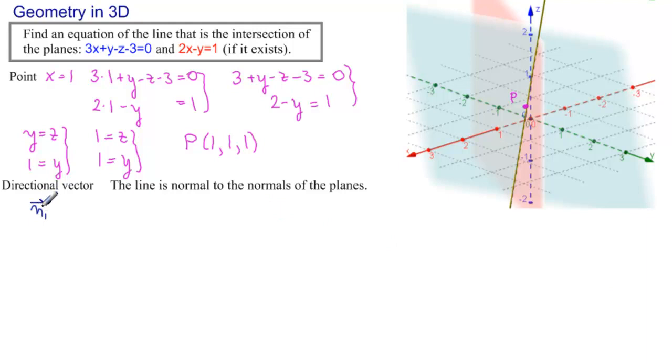N1. And we just take off the components. They have to be all on the same side. So 3, 1, minus 1. And N2 is 2, minus 1. And there's no z, so it's 0. 2, minus 1, 0.